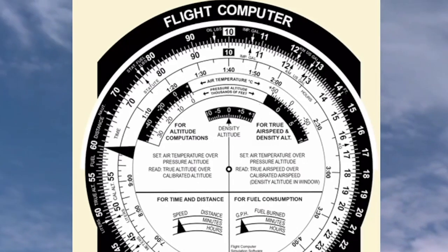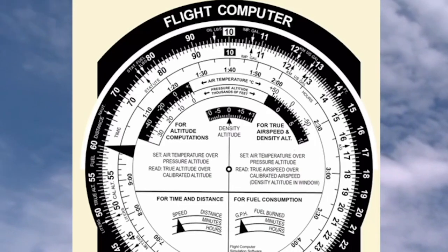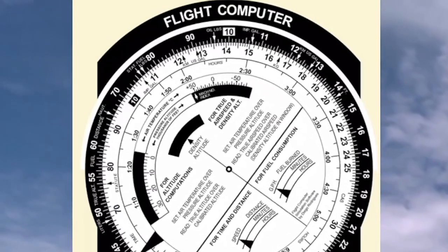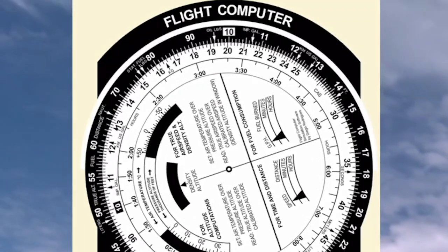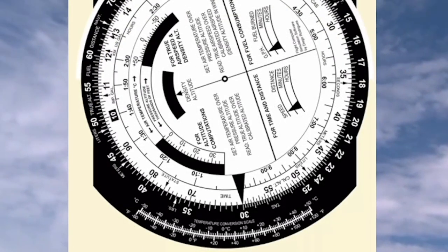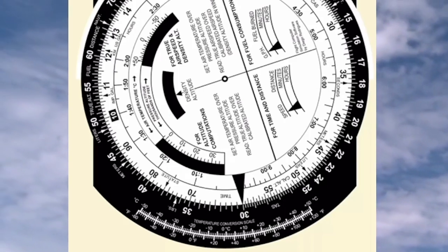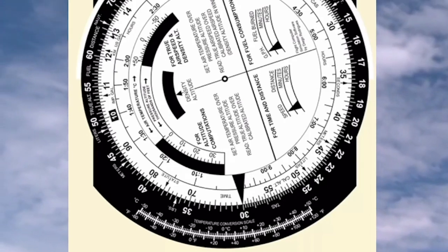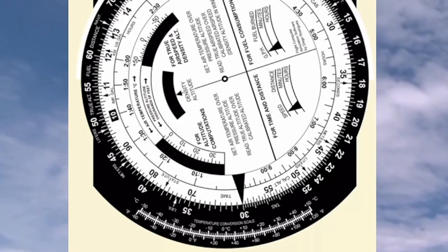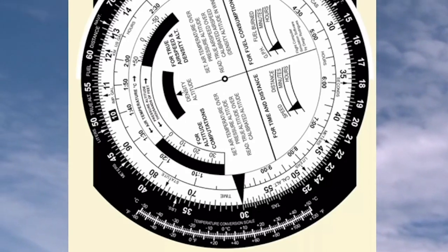Just like a slide rule, if you want to multiply 2 by 4, what you would do is put the index directly over the 2 on the movable C ring. Then you would read on the black ring out to the 4, which is at about the 7 o'clock position — it says 40 — and you'd read straight down. Now, even though the answer says 80 here, because we're multiplying 2 by 4 and it's 20 and 40, we realize that we have to drop that last zero, and the answer is 8.